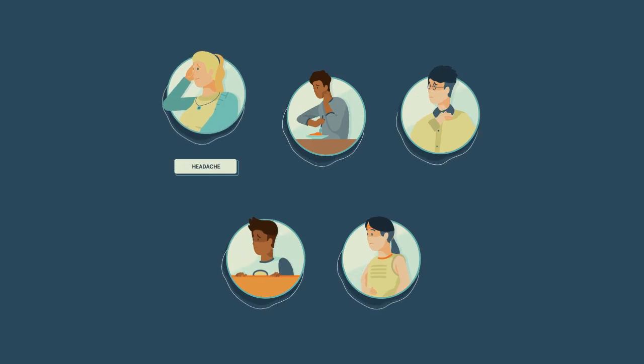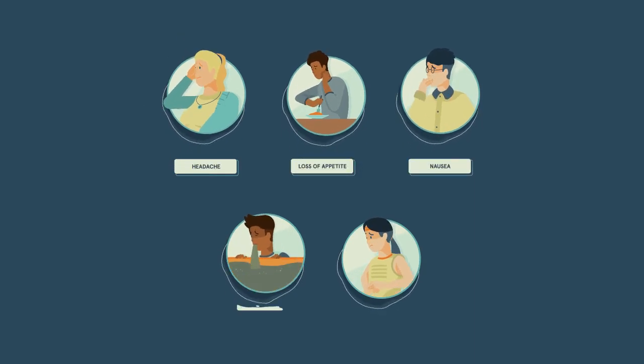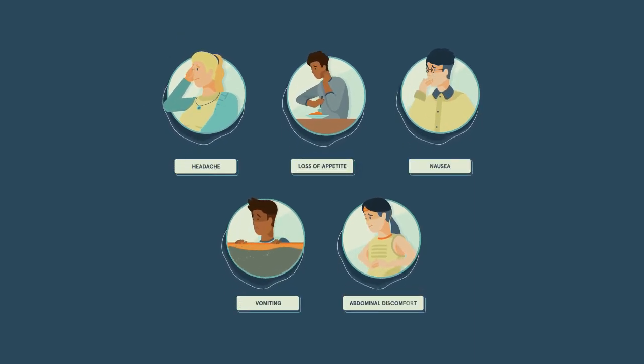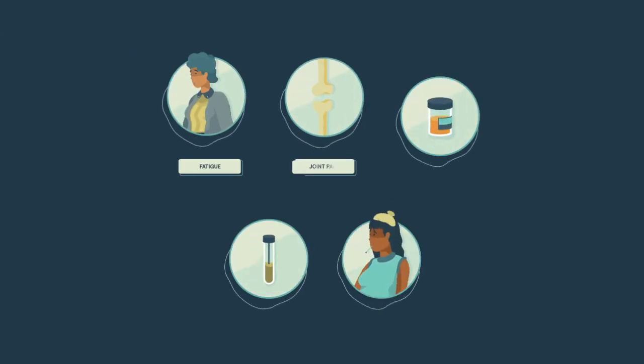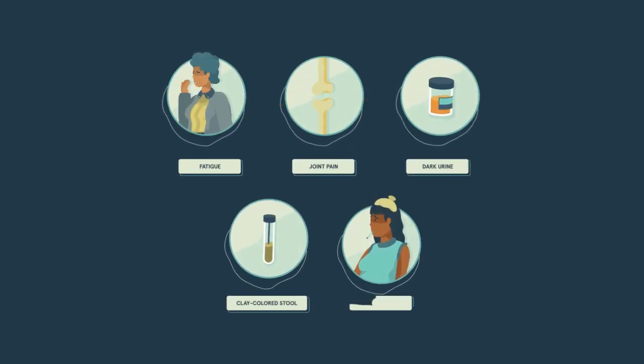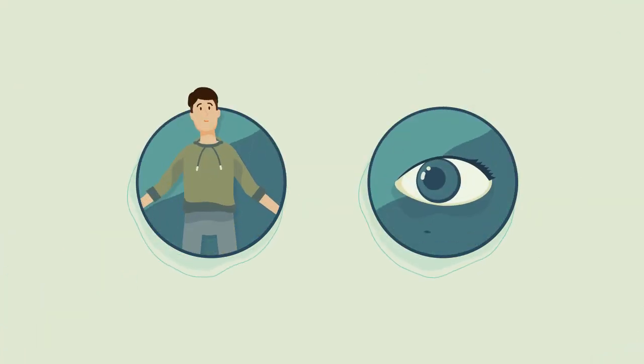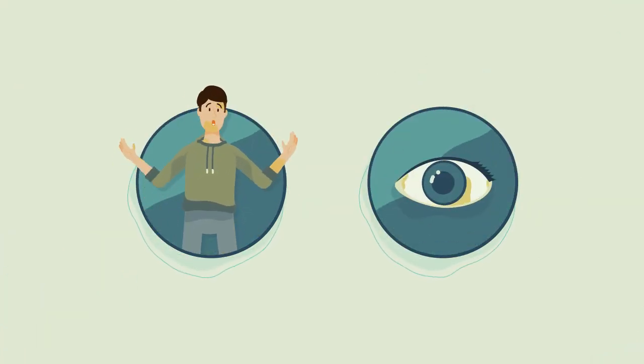Symptoms may include headache, loss of appetite, nausea, vomiting, abdominal discomfort, fatigue, joint pain, dark urine, clay-colored stool, and fever. Jaundice, a yellowish discoloration of the skin and whites of the eyes, occurs in most cases.